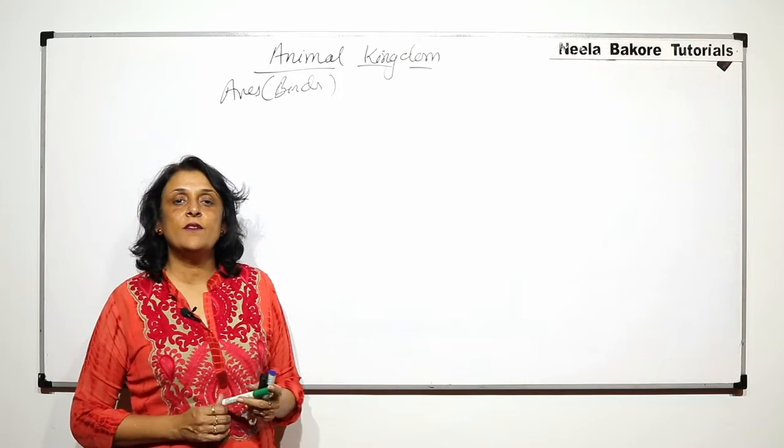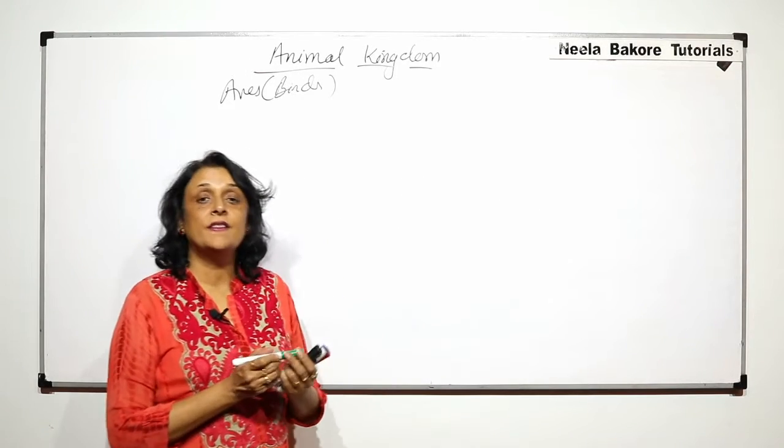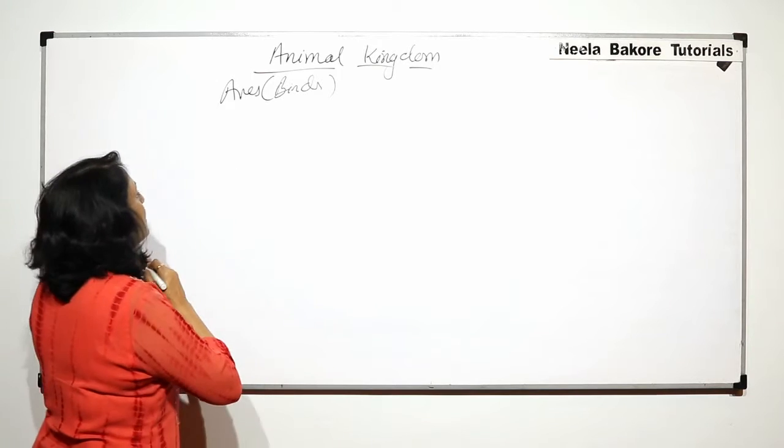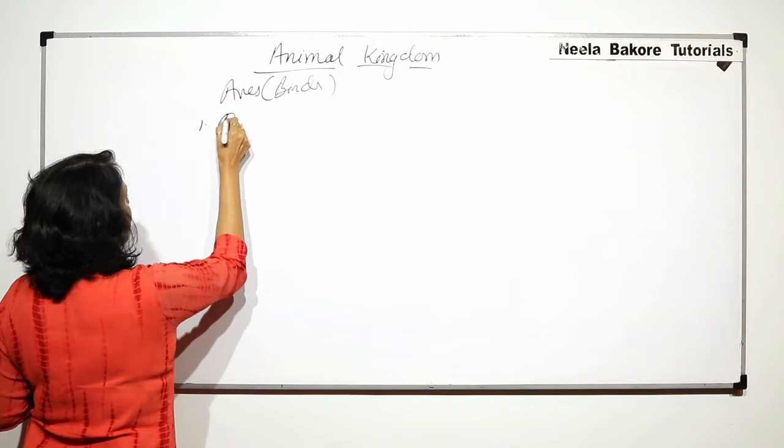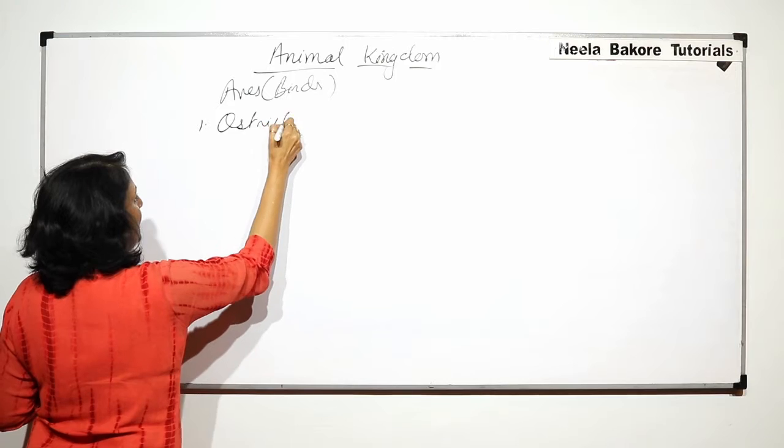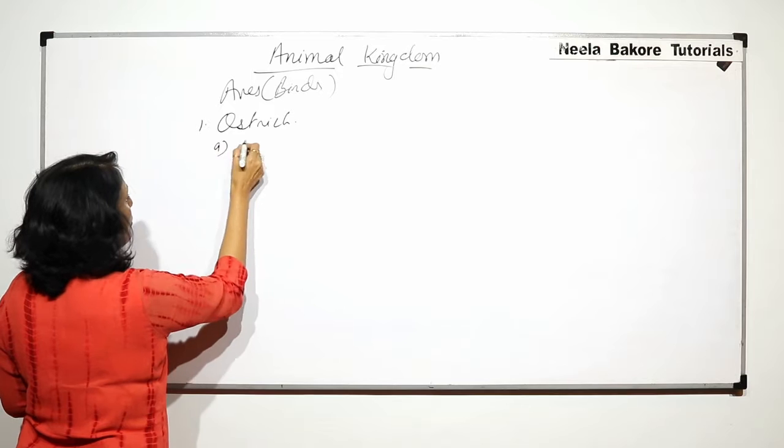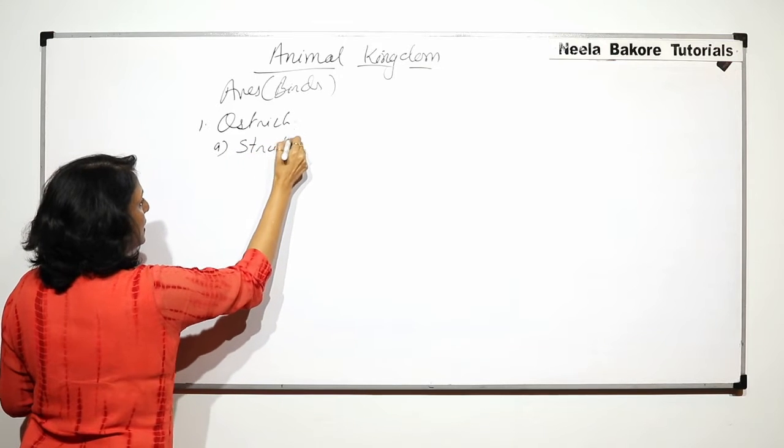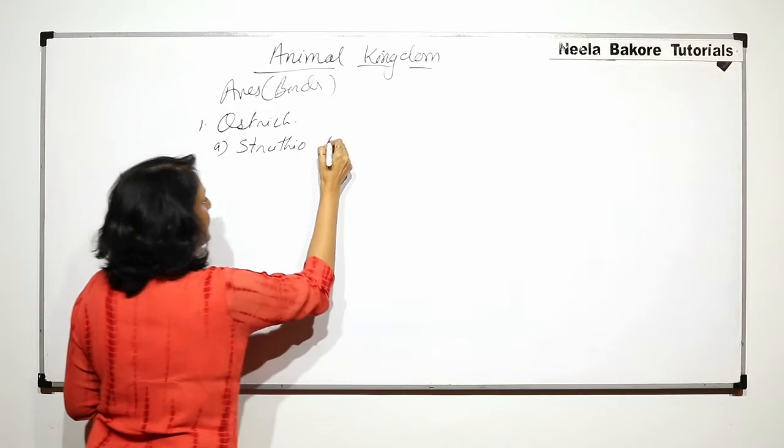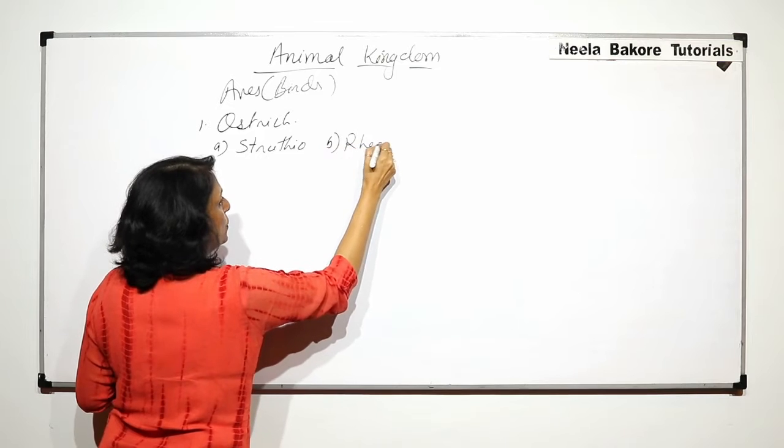In this part we will take few examples of the class Aves. The first is ostrich. There are two common ostriches: one is Struthio and the second one is known as Rhea.